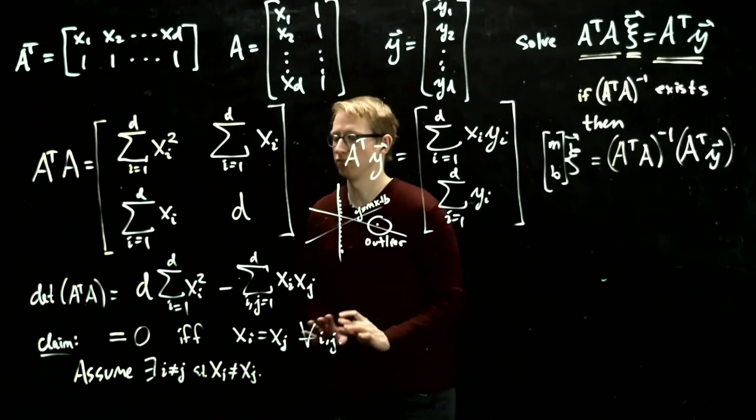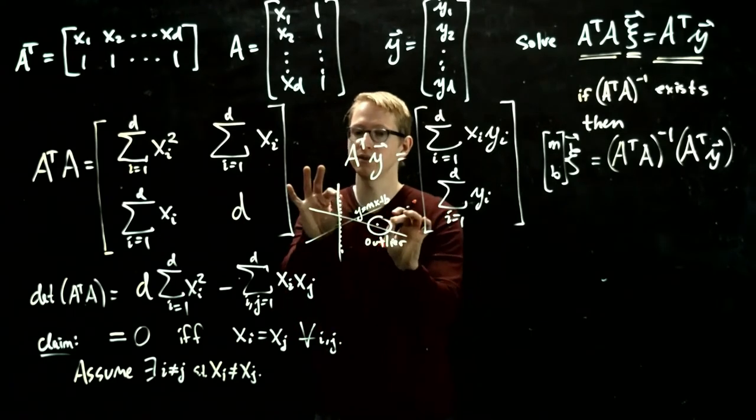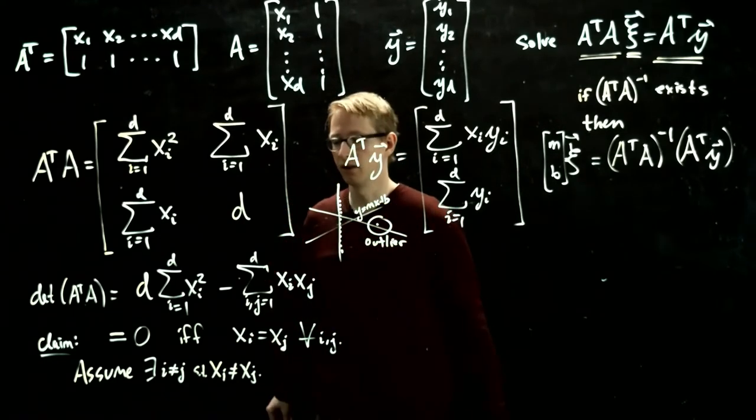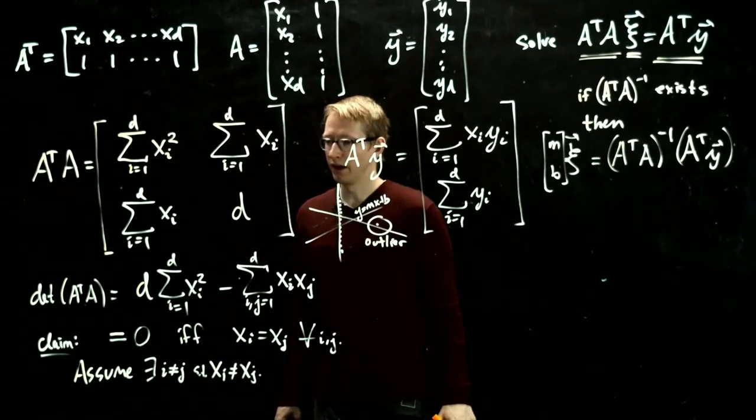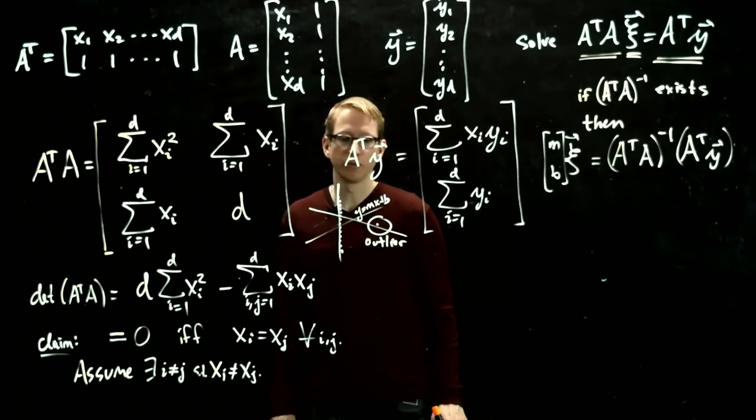So we just need to assume that we have at least two data points that do not lie on, that are not the same. When we make this assumption, we can compute this inverse.